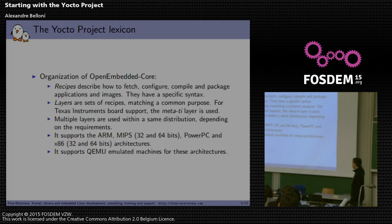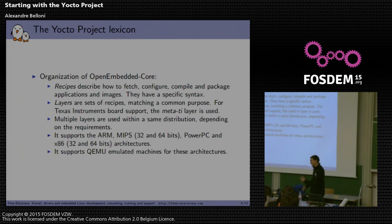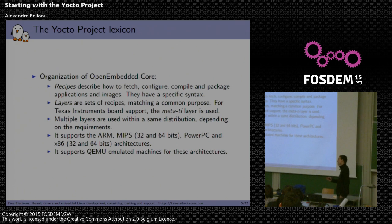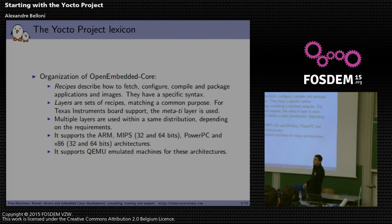You have a set of layers which include recipes, and also configs. In those configs you have machine configurations and related settings. By default, OpenEmbedded-Core supports ARM, MIPS, PowerPC, and x86. It doesn't support any particular machine — it only supports QEMU emulated machines. The BSPs themselves are not part of OpenEmbedded-Core.